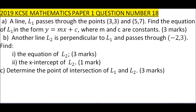What are you required to know here? First of all, you need to know how to get the equation of a line given two points, that is (3, 3) and (5, 7). Before that, you need to know how to get the gradient. Gradient equals change in y over change in x. So, gradient of L1 = (7 − 3) / (5 − 3) = 4 / 2 = 2.